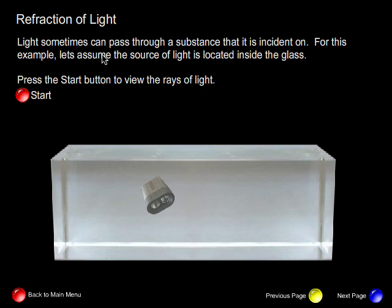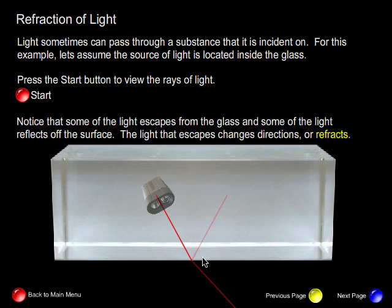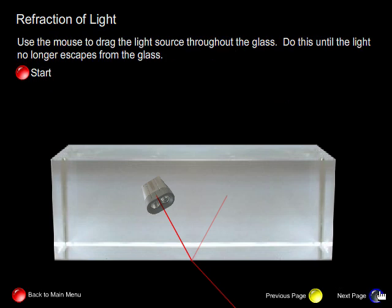Light can sometimes pass through a substance that it is incident on. For this example, let's assume the source of light is located inside the glass. We call this beam of light the incident ray. Now two things happen to the incident ray: it's reflected, and the light that escapes from the glass is refracted. Notice it changes directions.